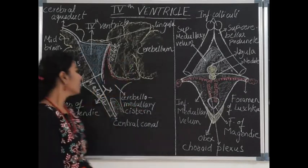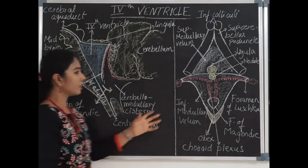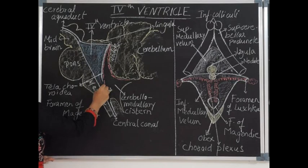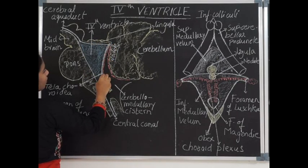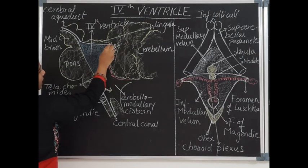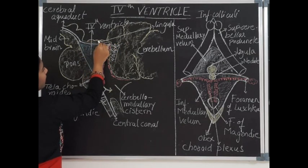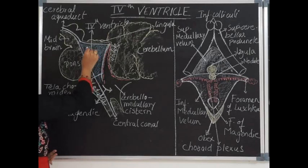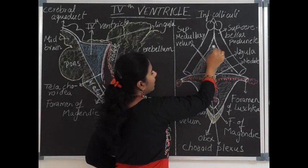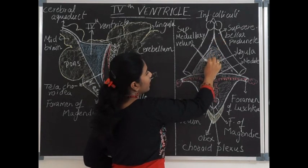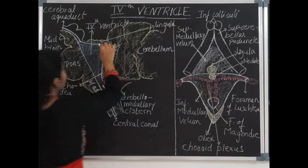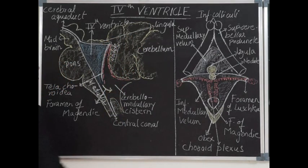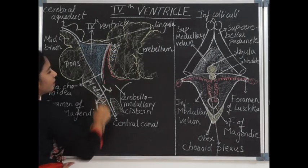The roof of the fourth ventricle is formed by the superior medullary velum and inferior medullary velum — these are the sloping surfaces separated by the dorsomedial recess. The superior medullary velum separates the lingula from the fourth ventricle. It is made up of white matter and converges the two superior cerebellar peduncles, bridging them and separating from the lingula of the cerebellum, which is part of the vermis.